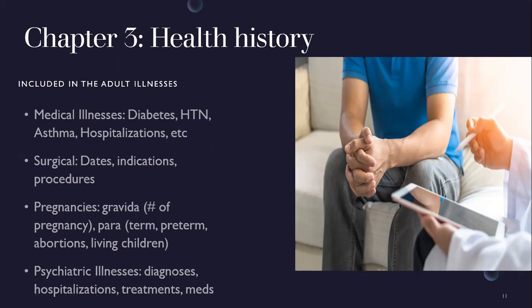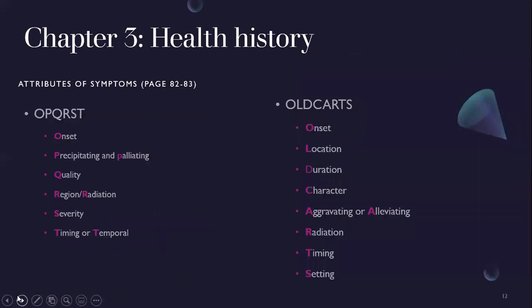Don't just ask 'do you have psychiatric illnesses' — ask specific questions like 'Have you ever been diagnosed with anxiety or depression?' or 'Are you taking medications for those?' because patients often don't consider anxiety or depression as psychiatric illness. Attributes of symptoms — this course uses OLD CARTS: Onset, Location, Duration, Character, Aggravating/relieving factors, Radiation, Timing, and Setting.